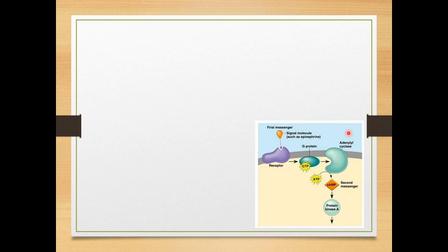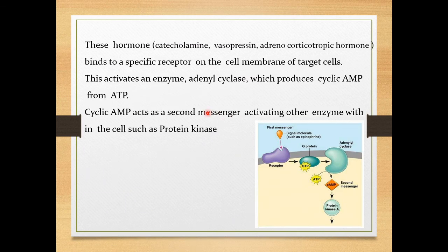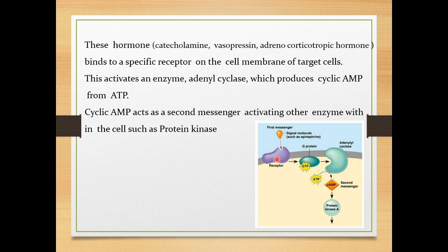What are the biological functions of cyclic AMP? Hormones like catecholamines — which are synthesized from the adrenal gland, like adrenaline, vasopressin (ADH), and adrenocorticotropic hormone — bind to receptors on the cell membrane. Cyclic AMP is a second messenger. The first messenger is the hormone itself, but many hormones are too large to enter the cell directly.